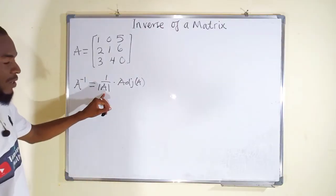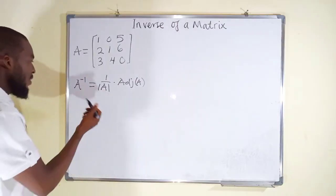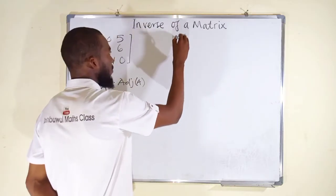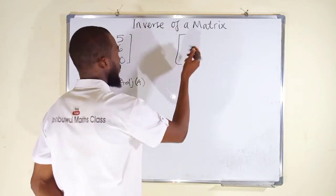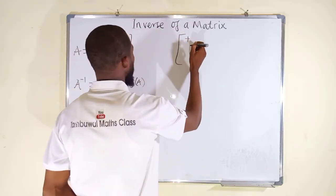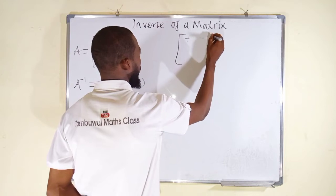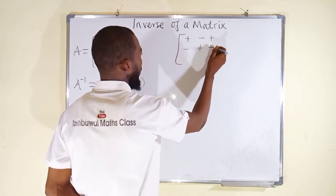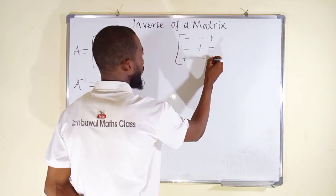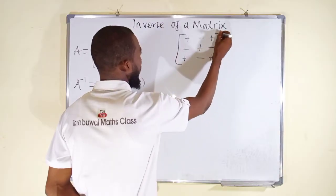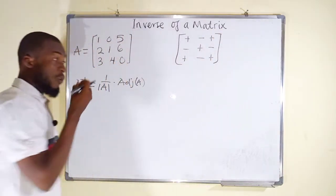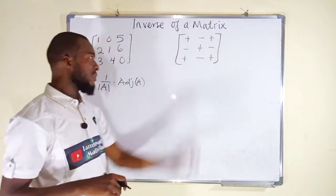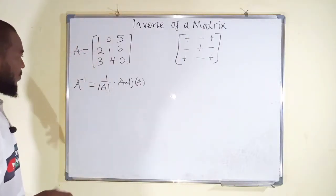To find the determinant of this matrix, remember the sign pattern: positive, negative, positive, negative, positive, negative, positive, negative, positive. Because we are going to find cofactors, we need this sign pattern.